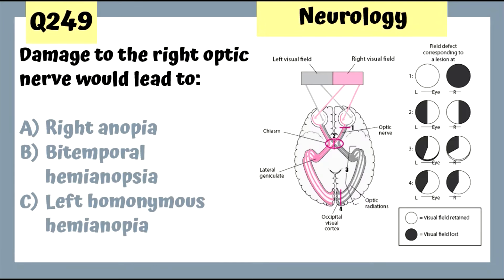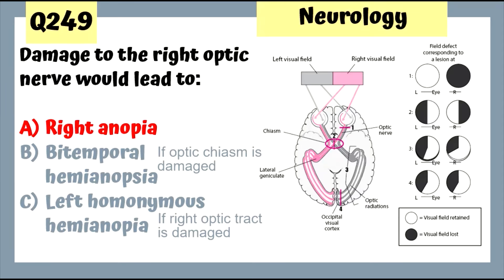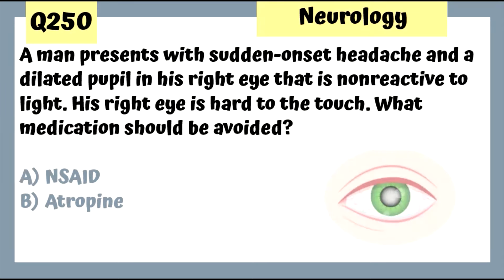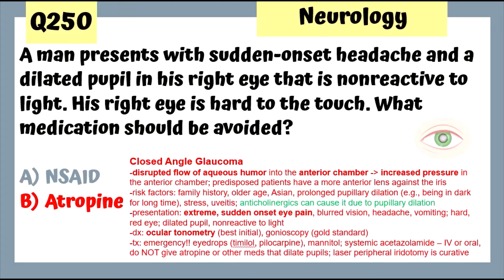Question 249: Damage to the right optic nerve leads to right amaurosis. Question 250: A man with sudden onset headache, a dilated non-reactive pupil in his right eye, and an eye that is hard to the touch has acute angle closure glaucoma. Do not give atropine or other medications that cause pupillary dilation.